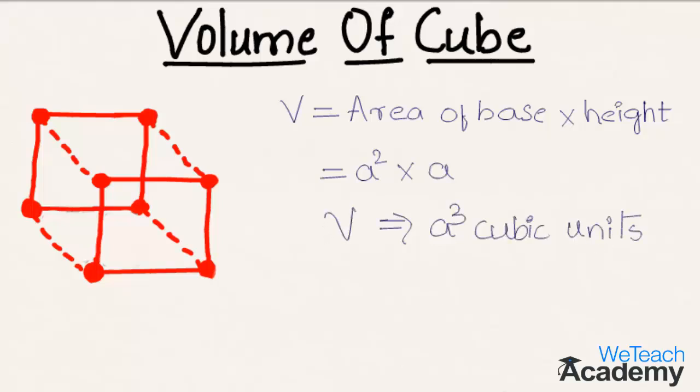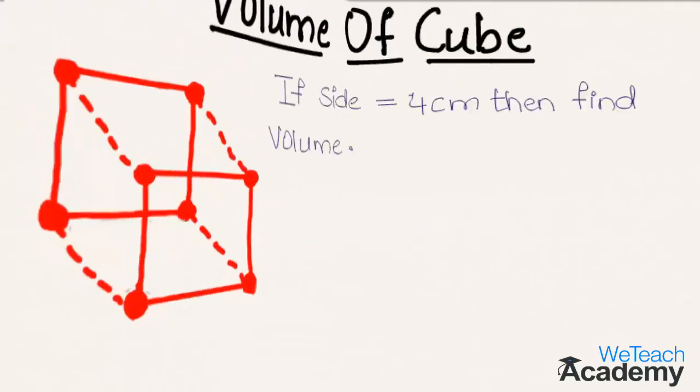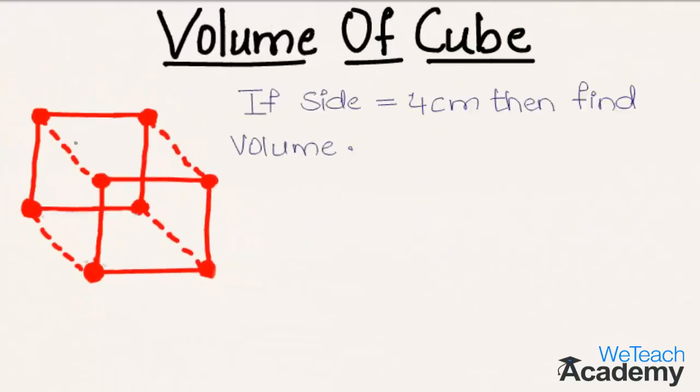Now let us use this formula and try to solve a few examples. Here the given example is: if side is equal to 4 centimeters, then find the volume. We already know that volume of a cube will be equal to a cube cubic units, and by substituting the value of side in the formula we get 4 cube.